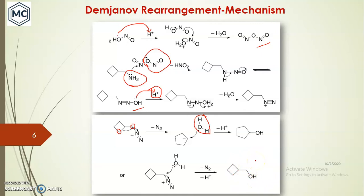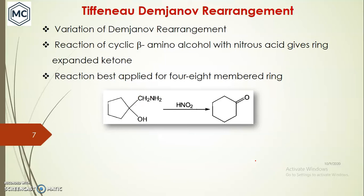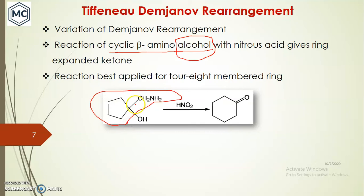The next rearrangement is the Schiemann-Demjanov rearrangement, which is a variation of the Demjanov rearrangement. The key difference is that the starting material is a cyclic beta-amino alcohol. In the Schiemann-Demjanov variant, a hydroxy compound is additionally present. With nitrous acid, you get a different product — whereas in Demjanov we obtained an alcohol, here we get a cyclic ketone.